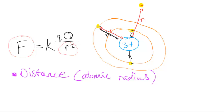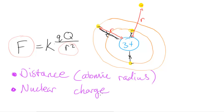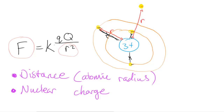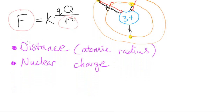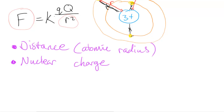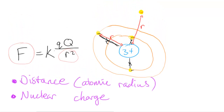So two factors that affect ionization energy are: distance — or atomic radius — and nuclear charge. The charge of electrons is not listed as a factor because it remains essentially constant and doesn't vary between atoms.